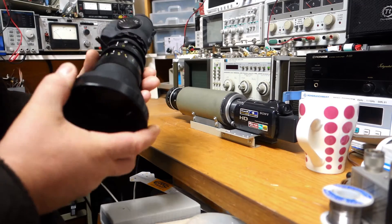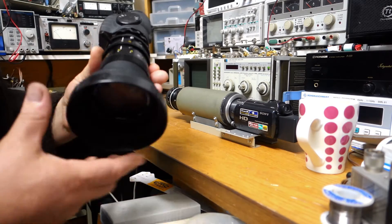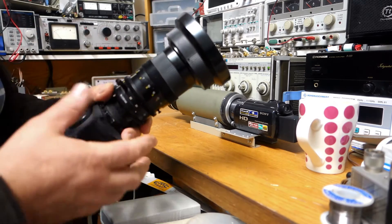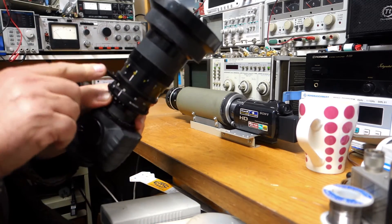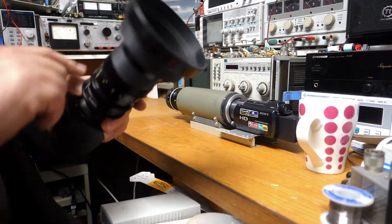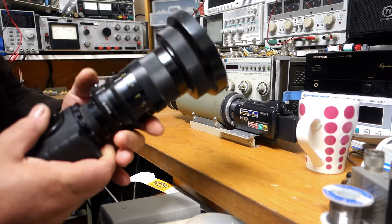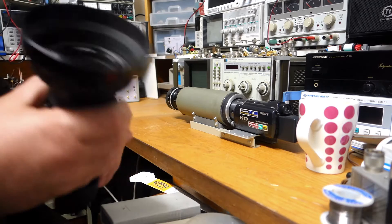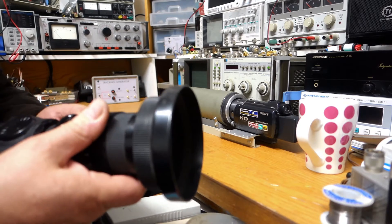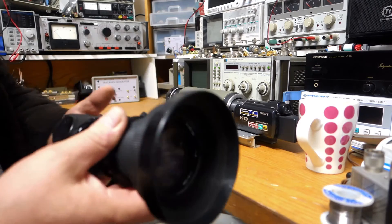You can see you've got your focus ring there. You've got your zoom ring here which zooms, and then you've got your iris, which on a normal photo camera would be your aperture ring. On a video lens it's called an iris and that adjusts how much light gets into the camera.